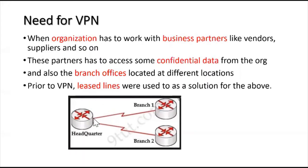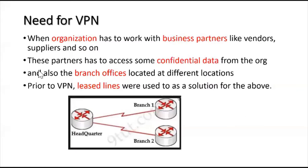Whenever the branch office or the network grows, the topology becomes somewhat like a mesh topology where each network is connected to all the other networks or all the other branch offices. So whenever the network grows to different locations, a lease line has to be implemented separately for each branch office or business partner. If the organization gains an additional business partner, they have to create a new lease line.